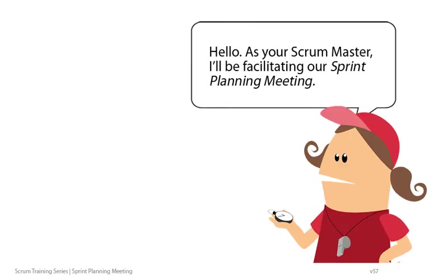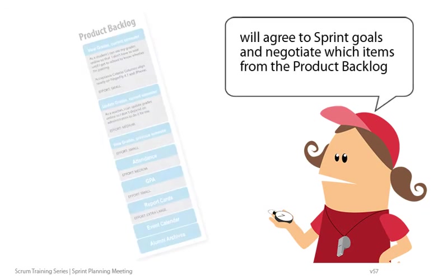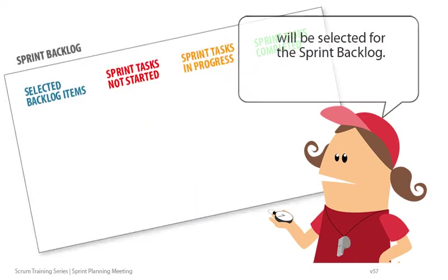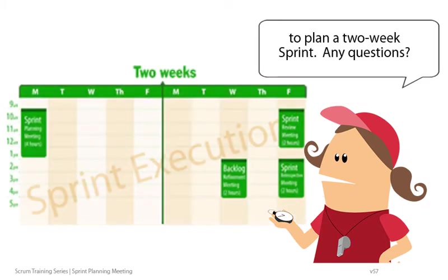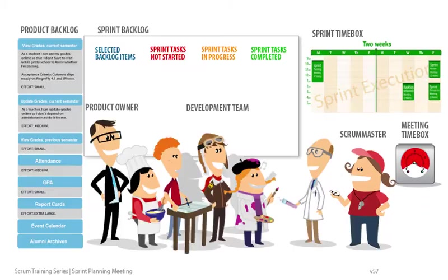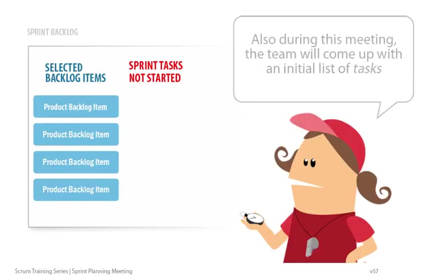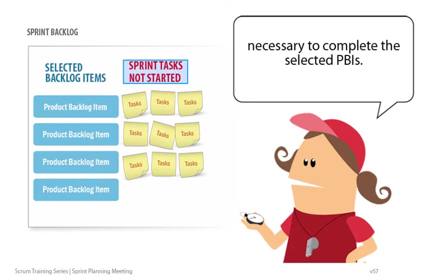Hello. As your Scrum Master, I'll be facilitating our Sprint Planning Meeting. During this meeting, the Product Owner and Development Team will agree to Sprint Goals and negotiate which items from the Product Backlog will be selected for the Sprint Backlog. During this meeting, the team will also come up with an initial list of tasks necessary to complete the selected PBIs.